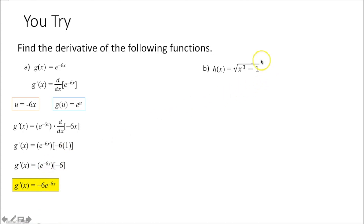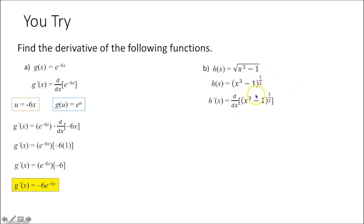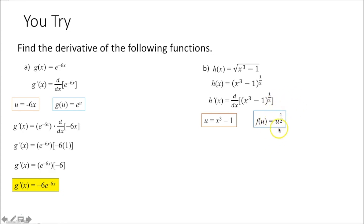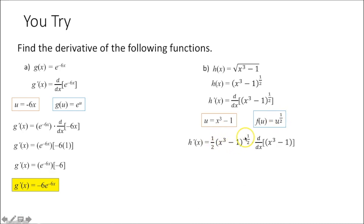For part b, I again want to rewrite any functions where it's difficult to take the derivative as is. When I have a radical, I'm going to rewrite that as an exponent. So instead of the square root of x cubed minus 1, I'm going to write x cubed minus 1 to the one-half power. When I take the derivative, I see I have an inner function and an outer function. I'm going to set u equal to x cubed minus 1, meaning my outermost function is u to the one-half power. The chain rule says I take the derivative: one-half u to the negative one-half, or one-half times x cubed minus 1 to the negative one-half.